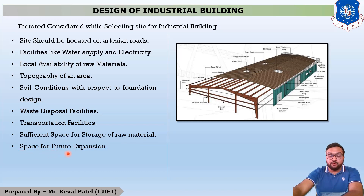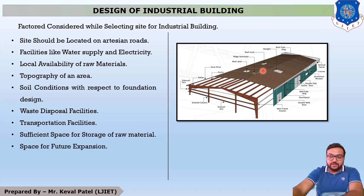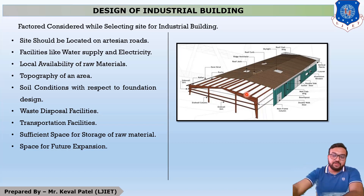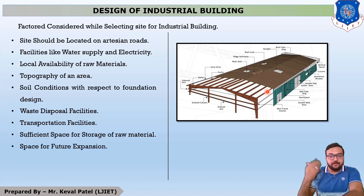Next is space for future expansion. These are the main important factors to keep in mind when selecting a site for any industrial building. Now you can see this industrial building. The components include a steel column, and this component is called as Principal Rafter (PR). This is called as Eve PR. All the horizontal members which support the roof material are called as Purlin.